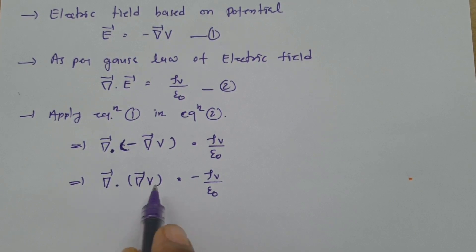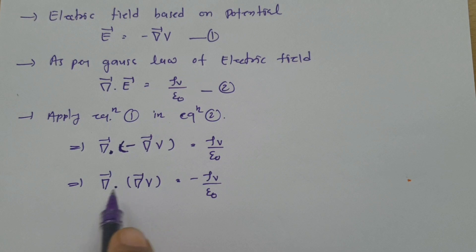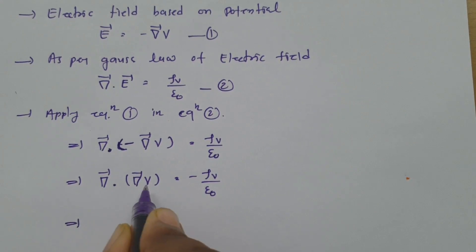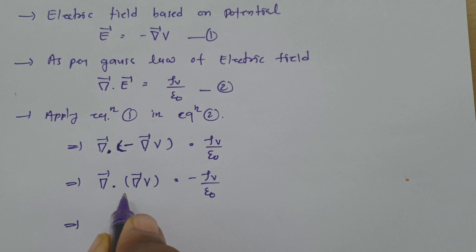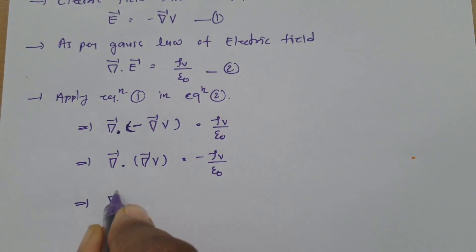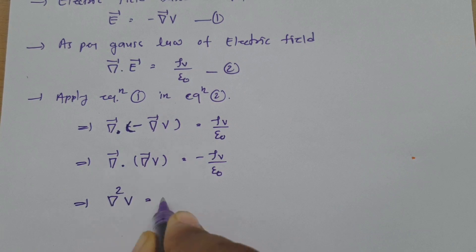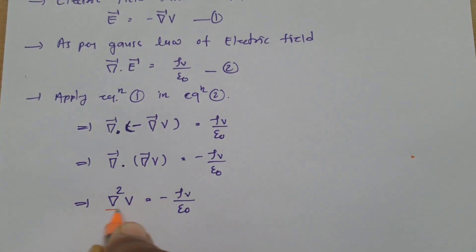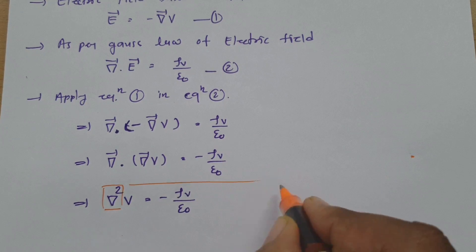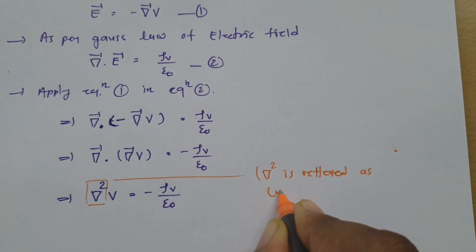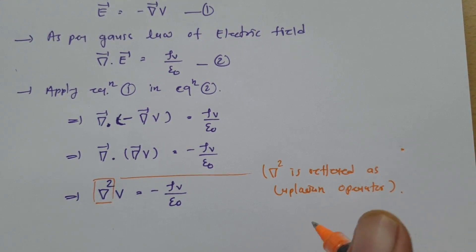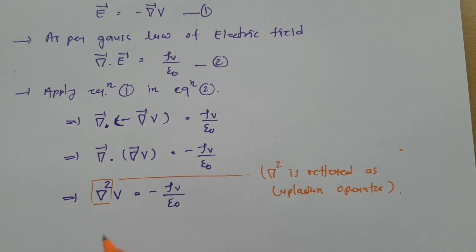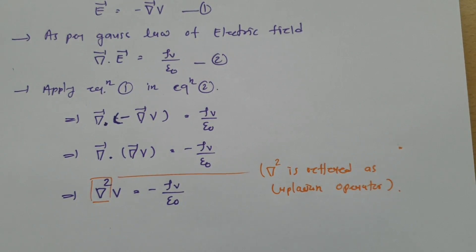Now, del dot del V — this is del squared, also represented as the Laplacian operator. So we can write: del squared V equals minus rho V by epsilon 0. In many books, this is written as: Laplacian of V equals minus rho V by epsilon 0. This equation is referred to as Poisson's equation.